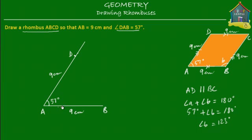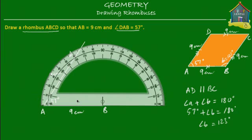So what you could do is take a protractor, put it at B, and mark an angle of 123 degrees with side AB. You could also draw a line parallel to AD using a set square, since opposite sides of a rhombus are parallel. Either approach works. Let's use a protractor — place it here at B and mark 123 degrees.